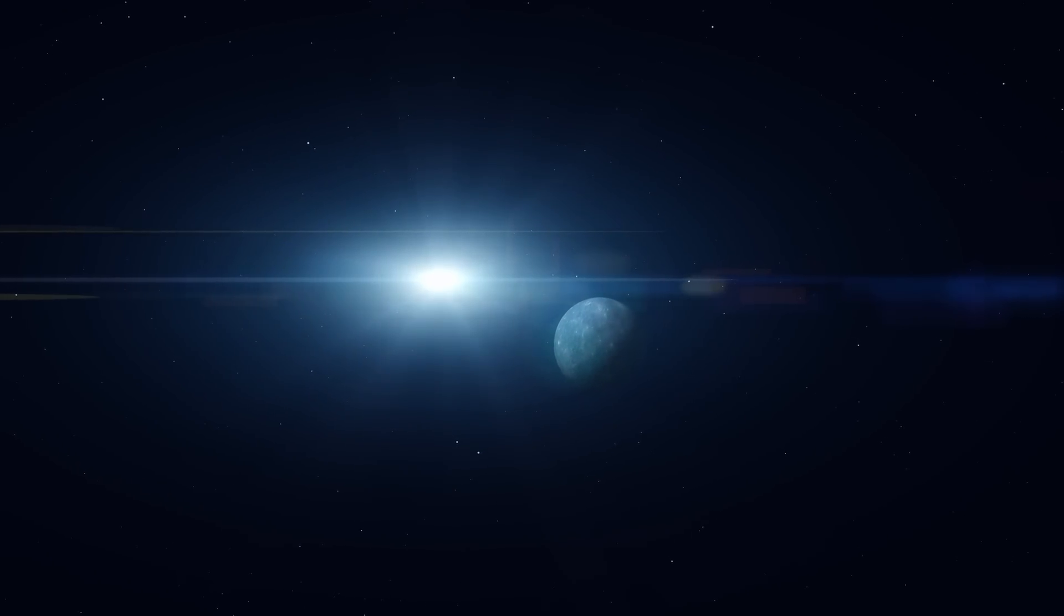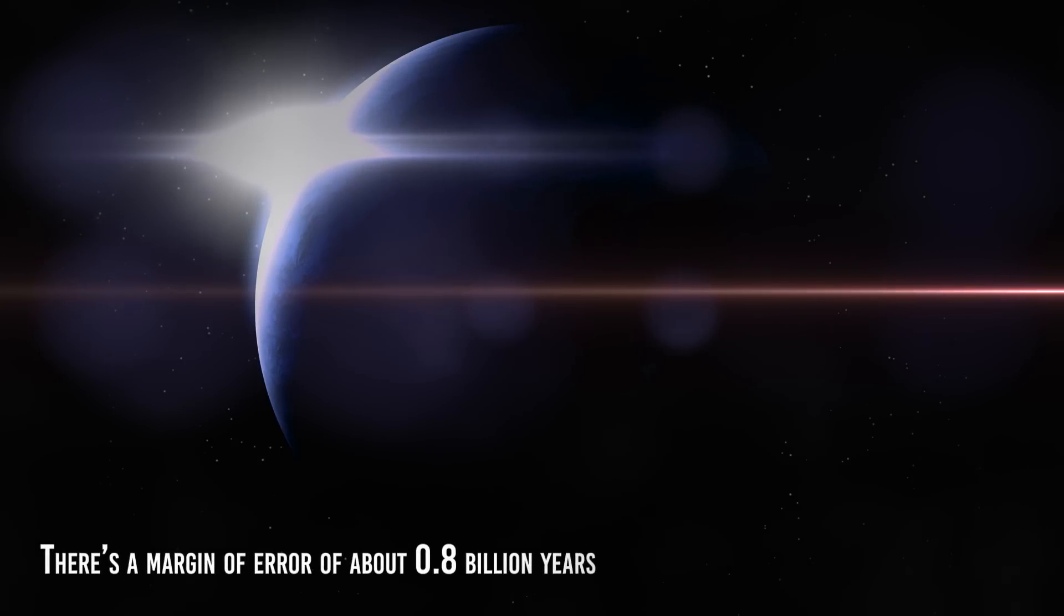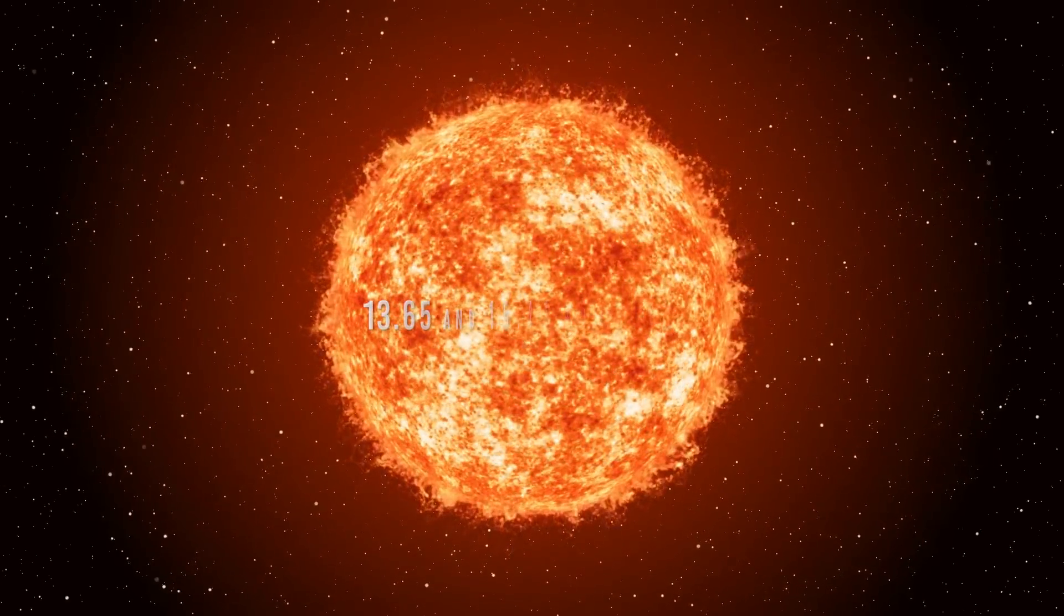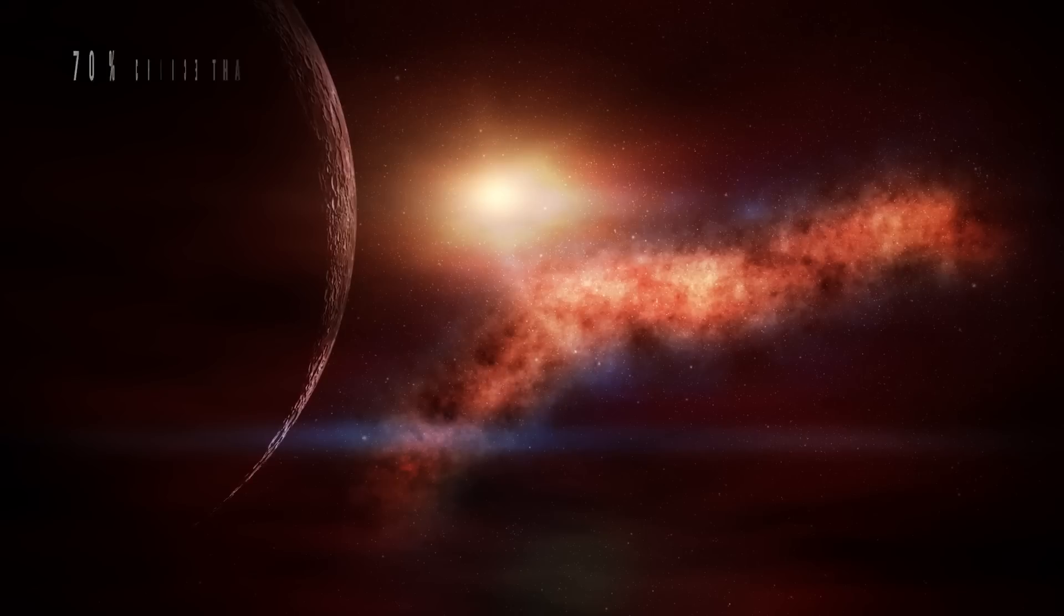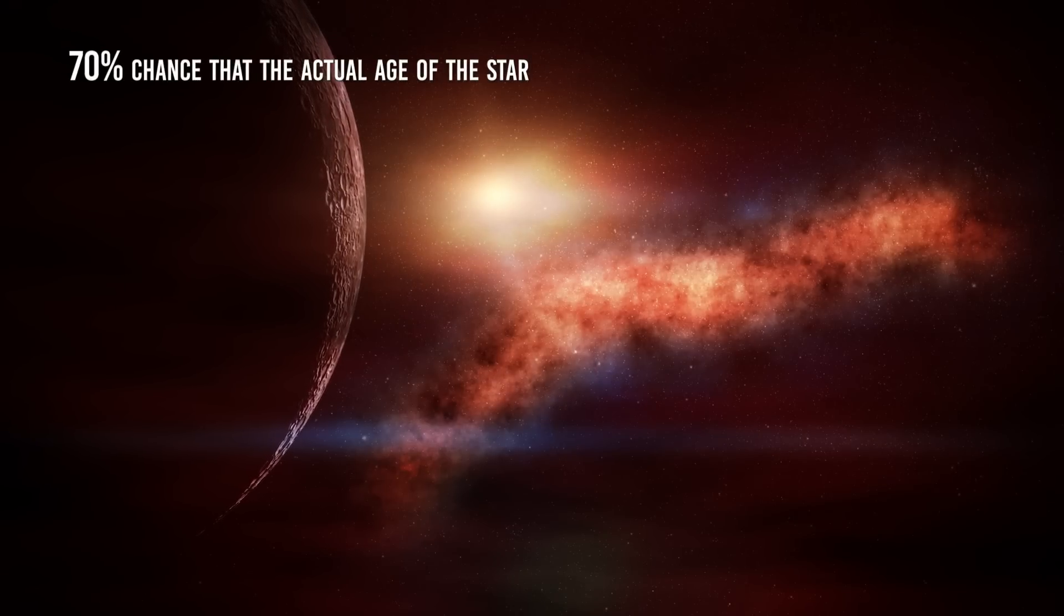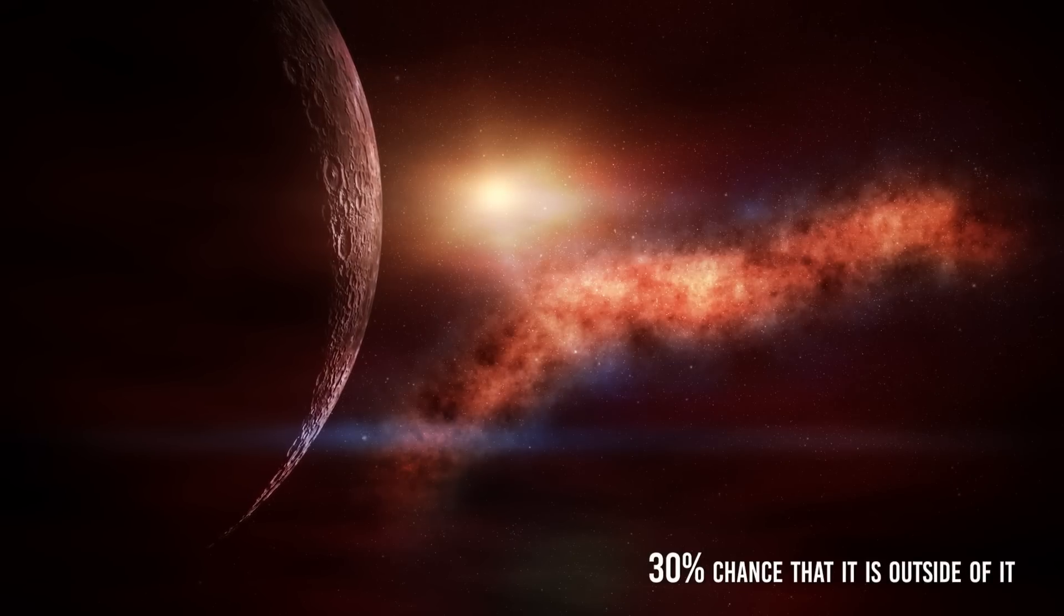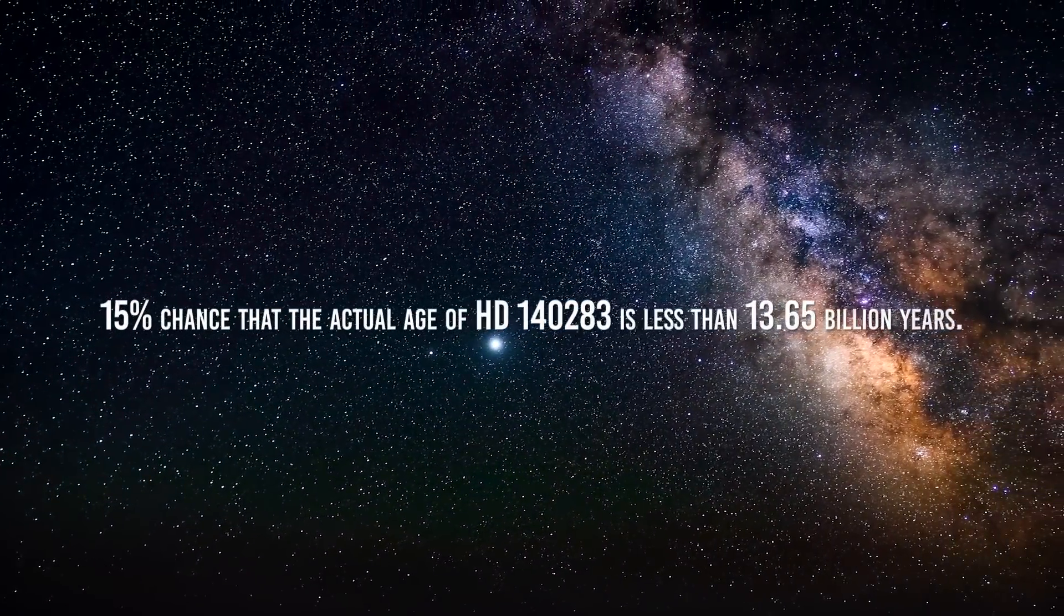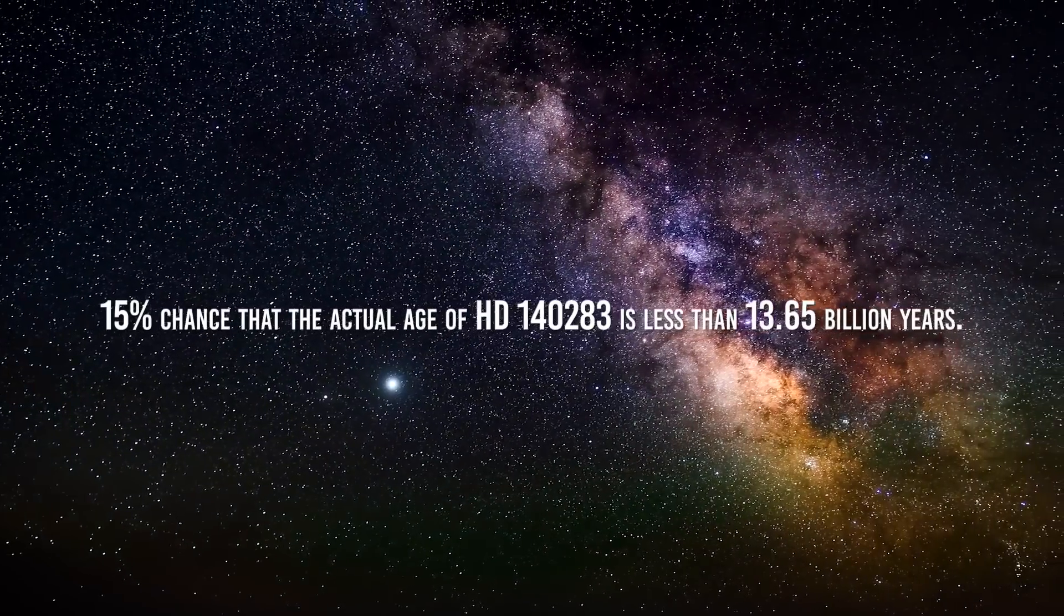Now, here's the real kicker. Even when we say Methuselah is about 14.45 billion years old, there's a margin of error of about 0.8 billion years. This means that the actual age of the star is somewhere between 13.65 and 15.25 billion years. More technically, there's a 70% chance that the actual age of the star is within that range and a 30% chance that it is outside of it. This further means that there is a 15% chance that the actual age of HD 140283 is less than 13.65 billion years.